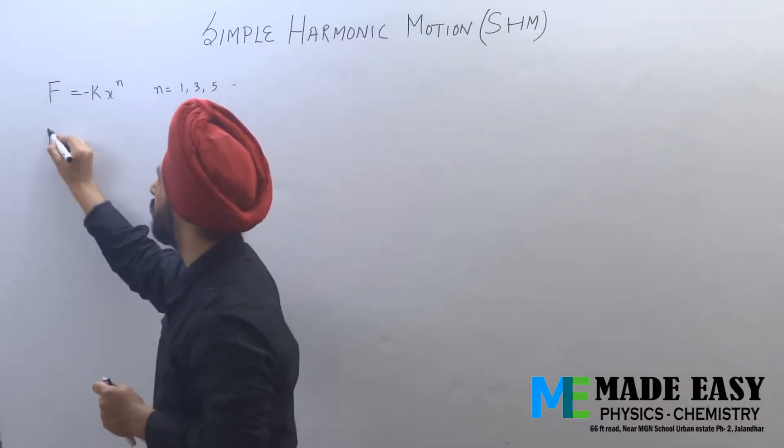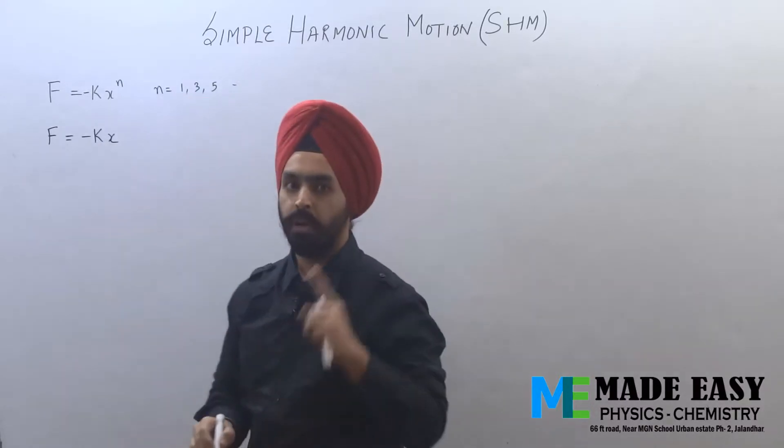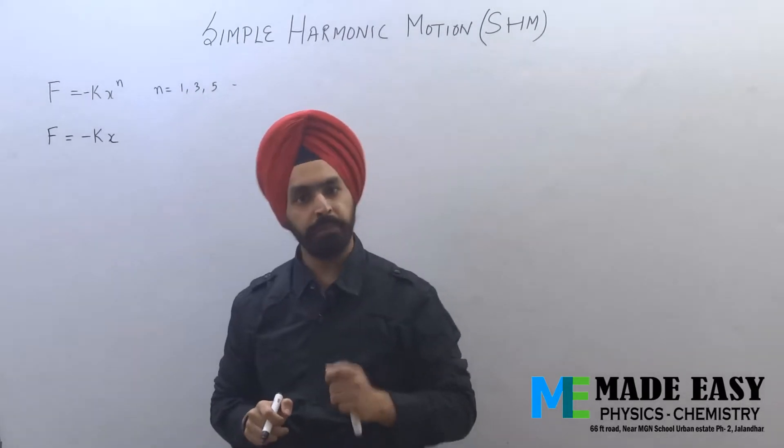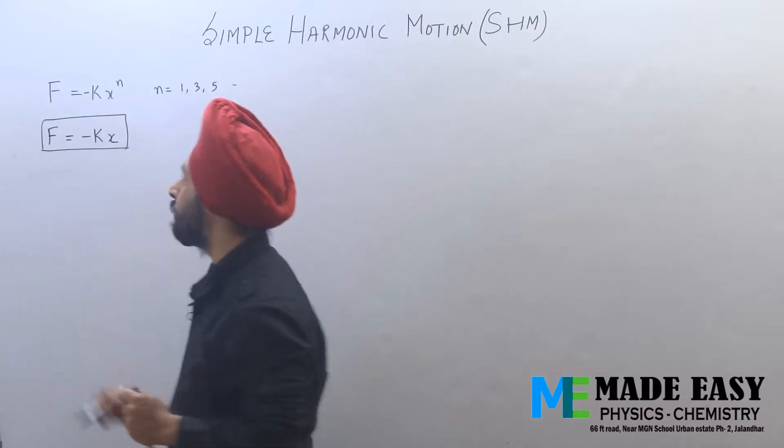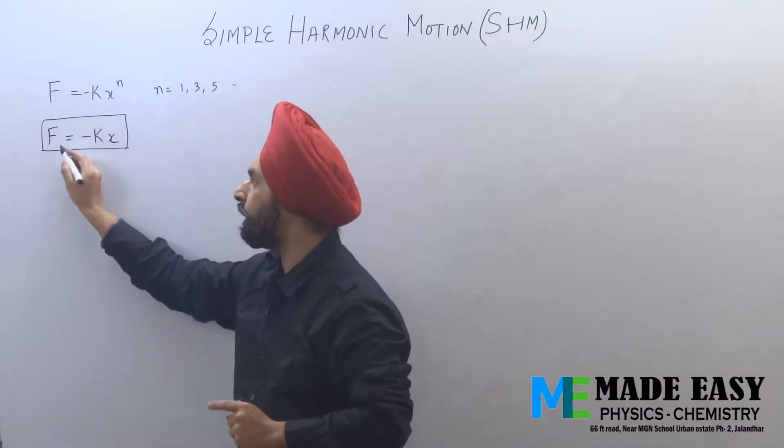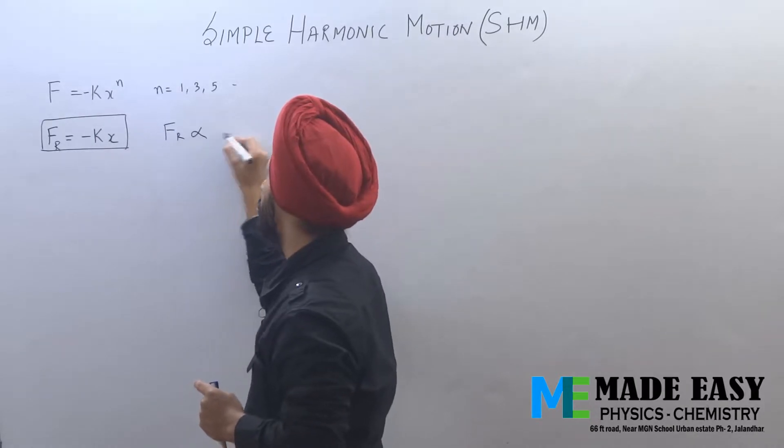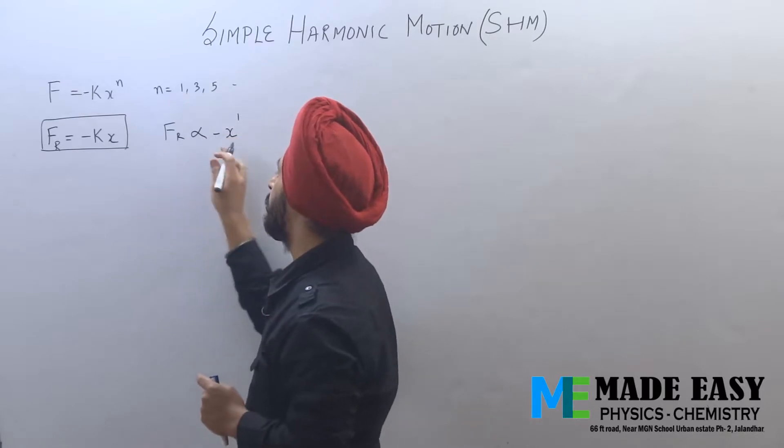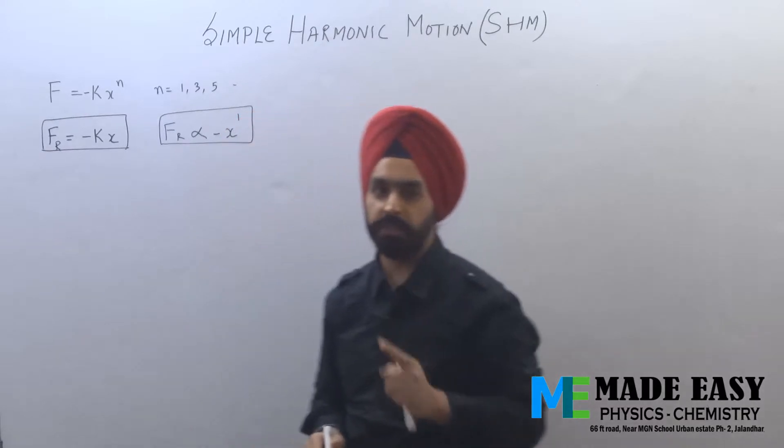When F is equal to minus kx power 1, this special kind of oscillation is called simple harmonic motion. Any oscillation is called simple harmonic motion when the restoring force is directly proportional to displacement power 1 with negative sign. The negative sign represents that displacement and restoring forces are in opposite directions.